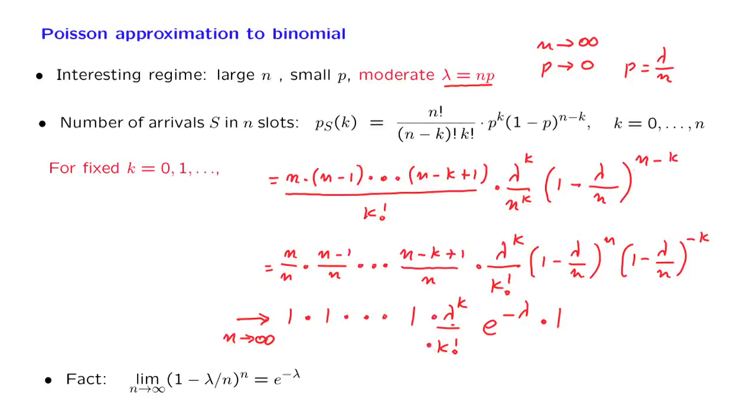So the only terms that are left are here. And essentially, what we have just established is that in the limit, the probability of k arrivals in a Bernoulli process, or the binomial probability evaluated at k, in the limit as n goes to infinity and p goes to 0, is given by this formula here. This is the formula for the Poisson PMF. And so what we have established is that the binomial PMF converges to a Poisson PMF when we take the limit in this particular way.